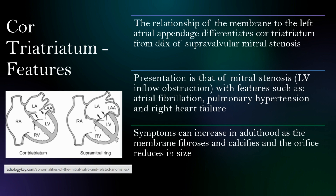When we look at them, the relationship of the membrane to the left atrial appendage does differentiate cor triatriatum from the differential diagnosis of supravalvular mitral stenosis. In the image here, we can see the membrane arising below the level of the left atrial appendage, whereas here it's actually above, proximal to the origin of the valves, because most may have a similar membrane-type appearance.